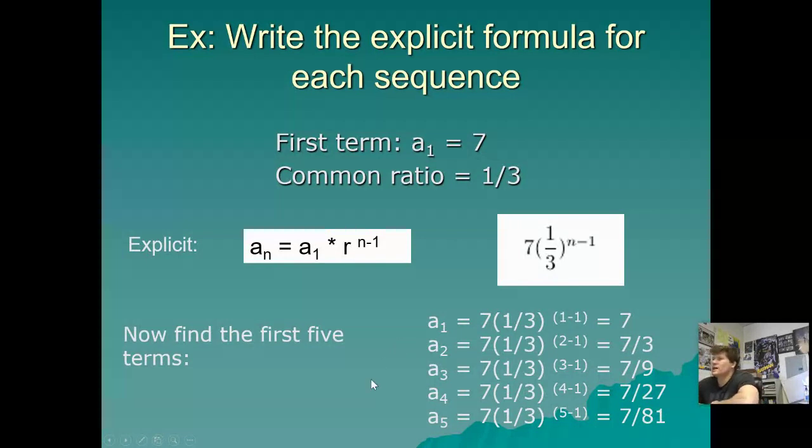Explicit formula. We can use this to find any term in a geometric sequence. Finding the first five terms, guys. Just plugging a 1 in, then plugging a 2, a 3, a 4, and a 5, and using a calculator to simplify this thing here. 7 times one third to the 1 minus 1 power. That's just 7. And then we're dividing by 3 every time. So 7 over 3, 7 over 9, 7 over 27, 7 over 81. First five terms.